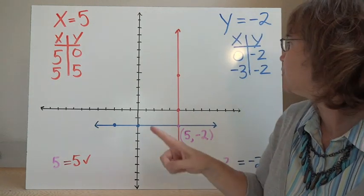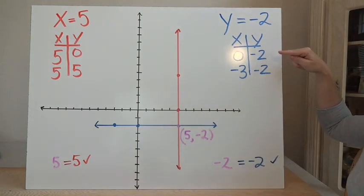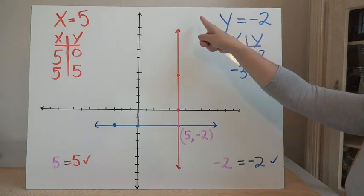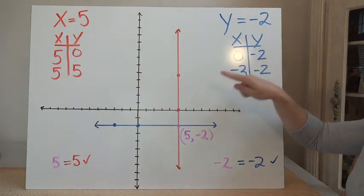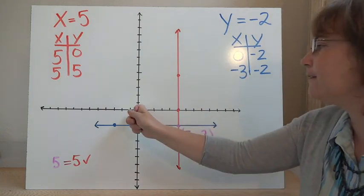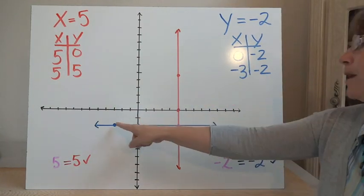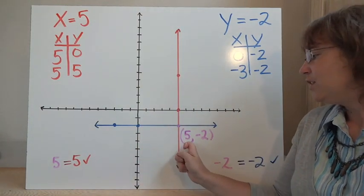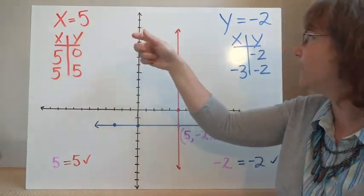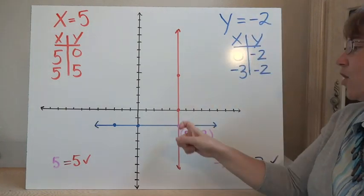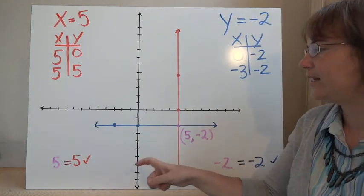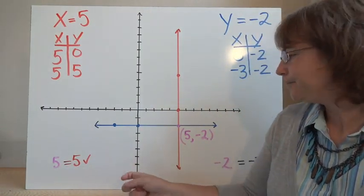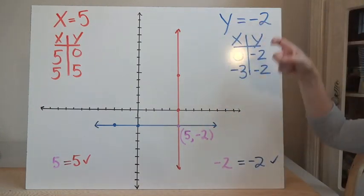For y equals negative 2, y is always going to be negative 2 no matter what x is. You could even write it as 0x plus y equals negative 2. At x equals 0, y equals negative 2; at x equals negative 3, y is also negative 2. So I plot those points and get a nice horizontal line. The point of intersection has to be where x is 5 and y is negative 2, giving the solution (5, negative 2). Plugging in: x equals 5 checks out, and y equals negative 2 checks out.